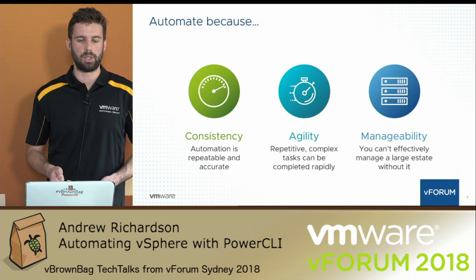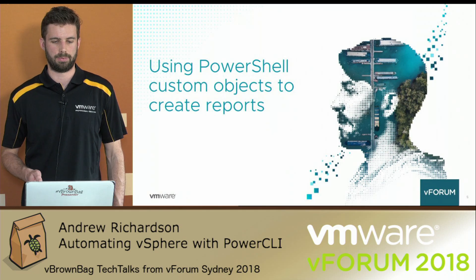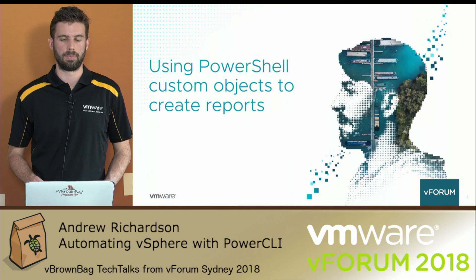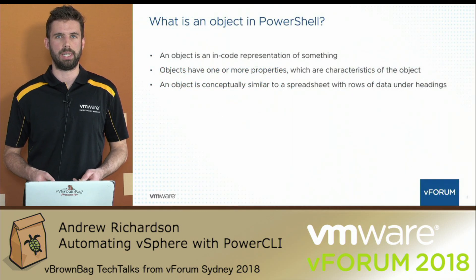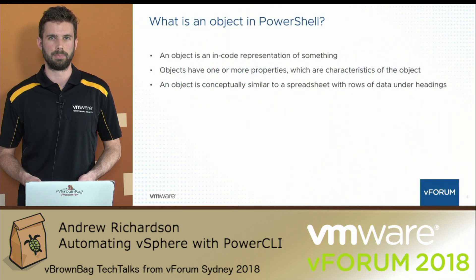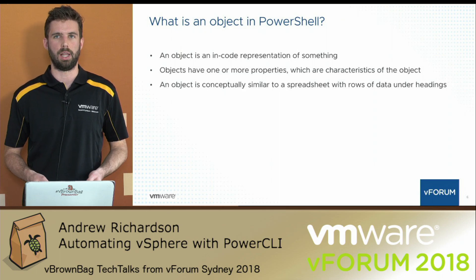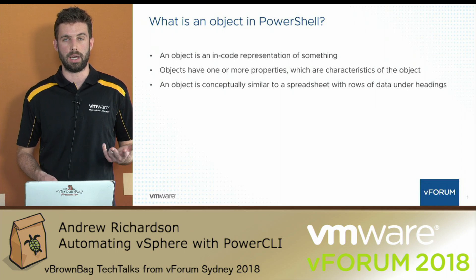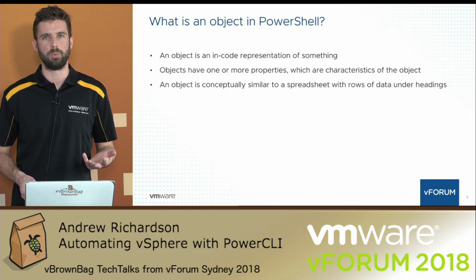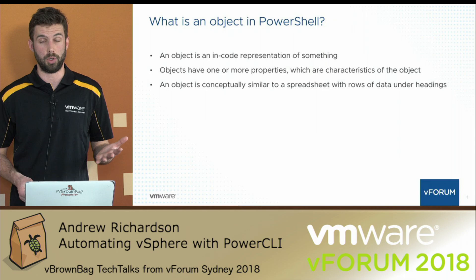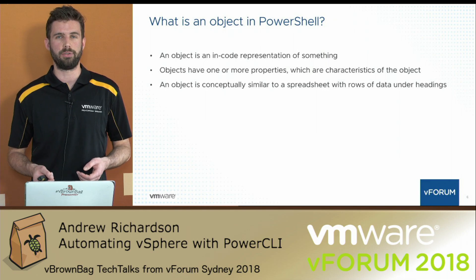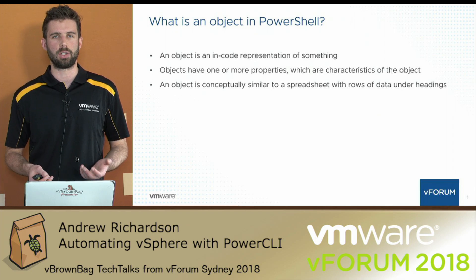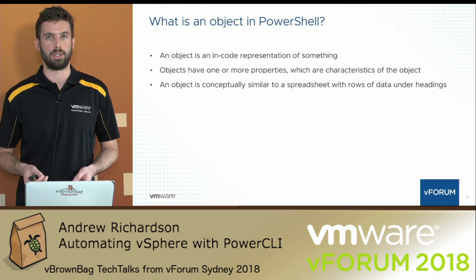Let's have a quick look at using PowerShell custom objects to create reports. Firstly, what is an object in PowerShell? An object in PowerShell is simply an encoded representation of something. In the context of vSphere and PowerCLI, an object could be a virtual machine, a data store, a network port group, a host cluster, or an actual host itself. Pretty much anything you can think of interacting with in the vSphere client can be represented as an object within PowerShell using PowerCLI.